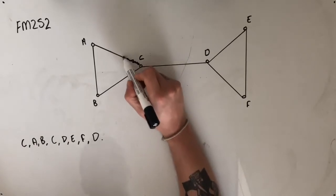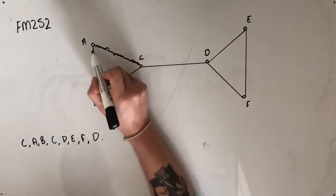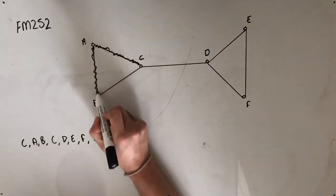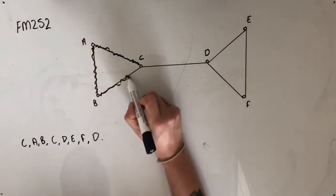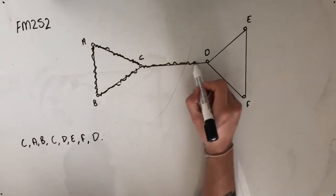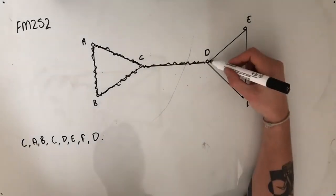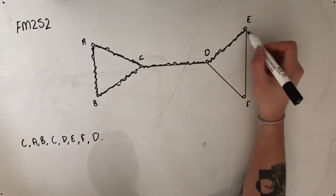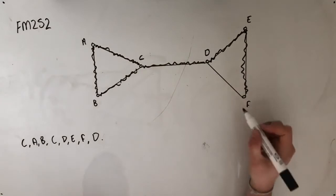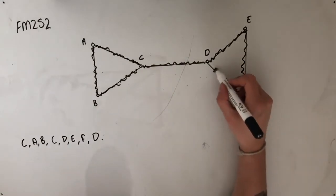He travels from C to A, from A to B, from B to C, from C to D, from D to E, from E to F, and then from F to D.